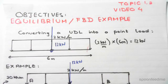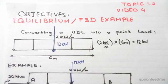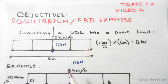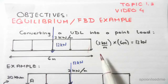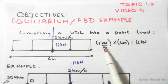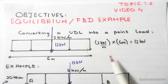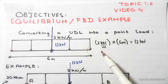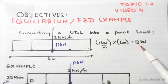So how do we convert the UDL into a point load? Simply, we multiply the UDL by its span and we get this as a point load. We do 2 kilonewtons per meter times its length, which is 6 meters. Meter cancels out with meter, so we end up with 12 kilonewtons.